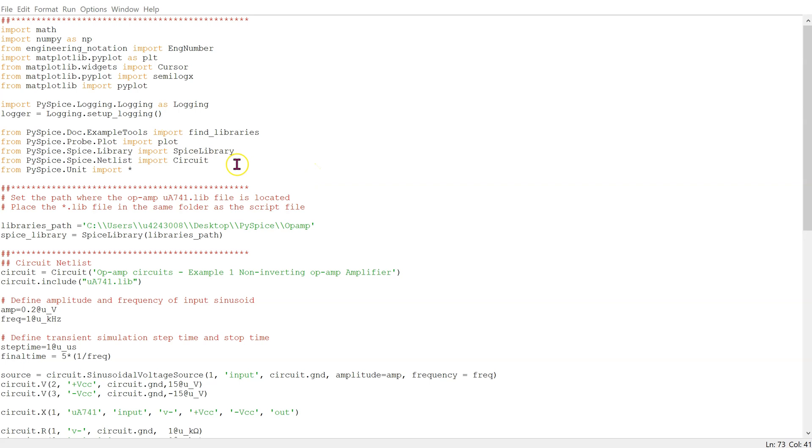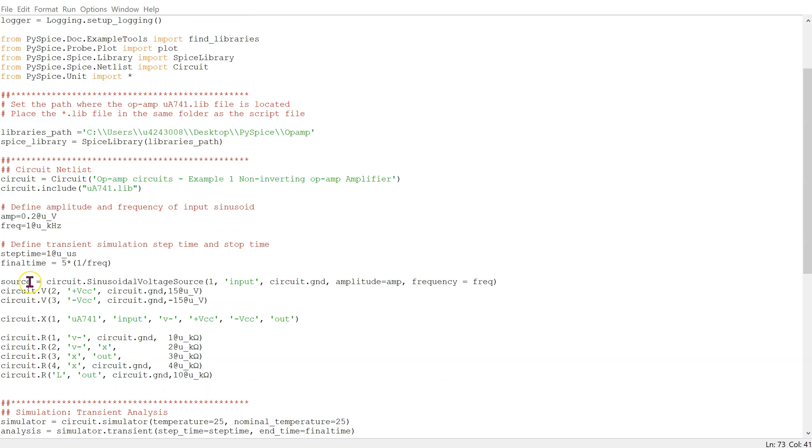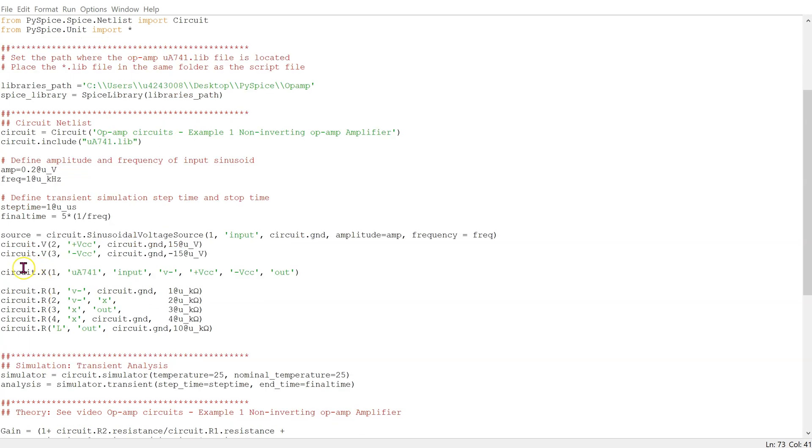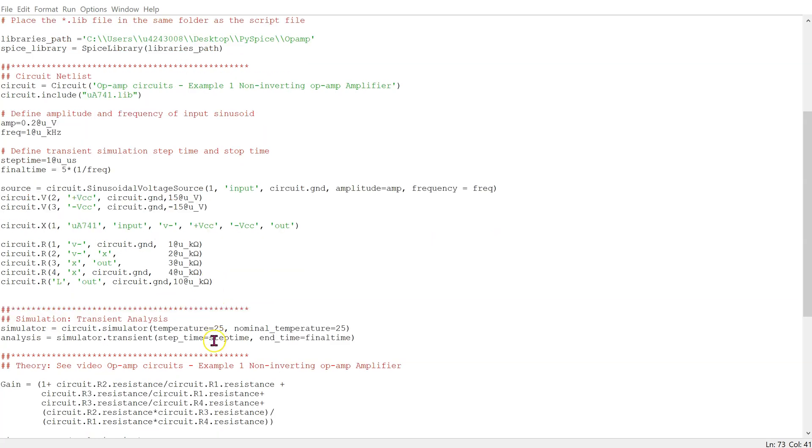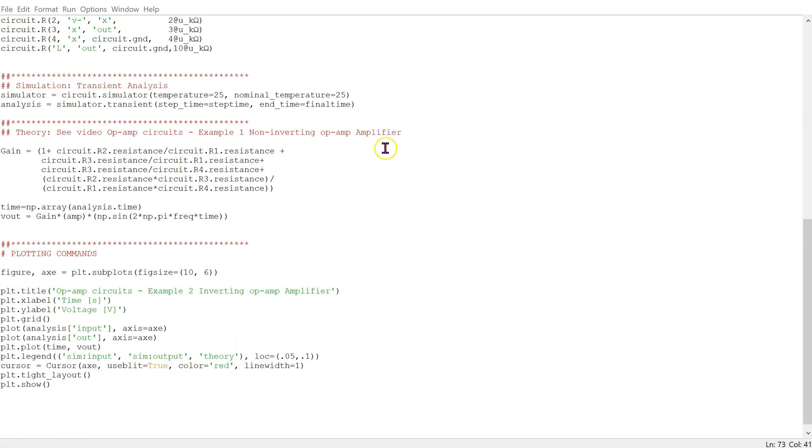Here we have the Python code to simulate a non-inverting op-amp amplifier with a sine input having an amplitude and frequency. We define the step time and the final time for the transient simulation. We change the input voltage to be a sine voltage source as shown here. The rest of the netlist is unchanged. We invoke the transient simulation. And also we add the plotting commands to plot the simulated as well as the theoretical values.